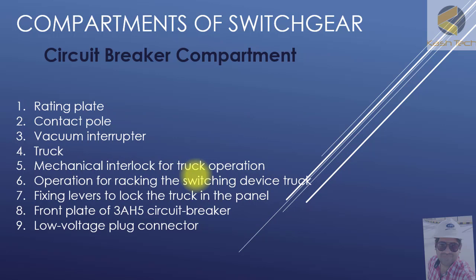In the circuit breaker compartment you can also find: a rating plate, contact pole vacuum interruptor, a truck mechanical interlock for truck operation for racking the switching device, a truck fixing lever to lock the truck in the panel. The truck can be replaced with a drum trolley, which is mostly used in UK standard. There is also a front plate of the HV5 circuit breaker and a low voltage plug connector.